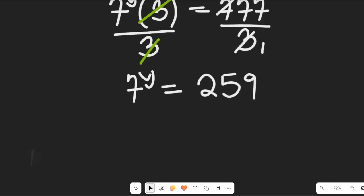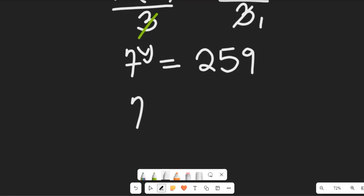So we have 7 to the power of y equal to 259. And 7 to the power of y can be equal to 259.